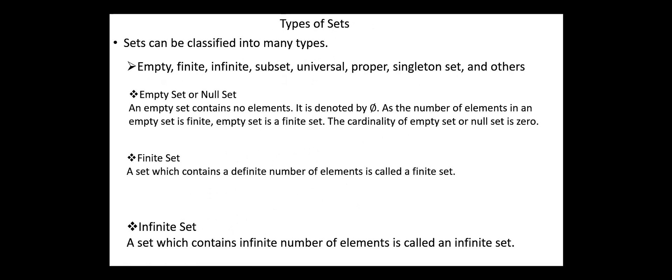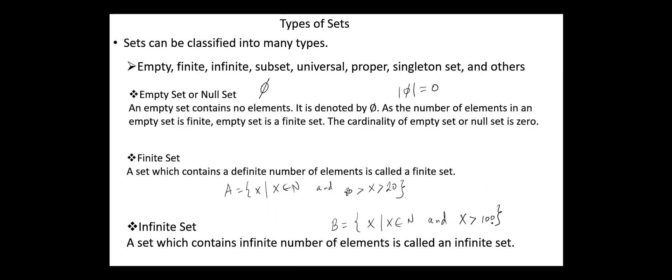Next, types of sets. Sets can be classified into many types: empty, finite, infinite, subset, universal set, proper set, singleton set, and others. An empty or null set contains no elements; its cardinality equals 0. A set which contains a definite number of elements is called a finite set. For example, A = {x | x ∈ N and 20 < x < 80} is a finite set. A set which contains an infinite number of elements is called an infinite set. For example, B = {x | x ∈ N and x > 100} is an infinite set, and its cardinality equals infinity.